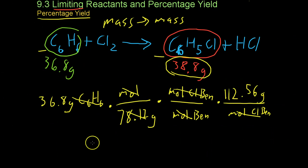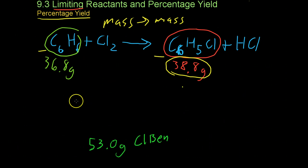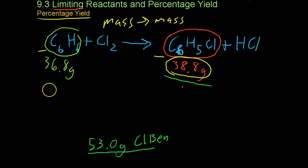Once you do all the final math, you get an expected value of 53.0 grams of chlorobenzene. So now that we have a theoretical yield and an actual yield, we can calculate the percentage yield.